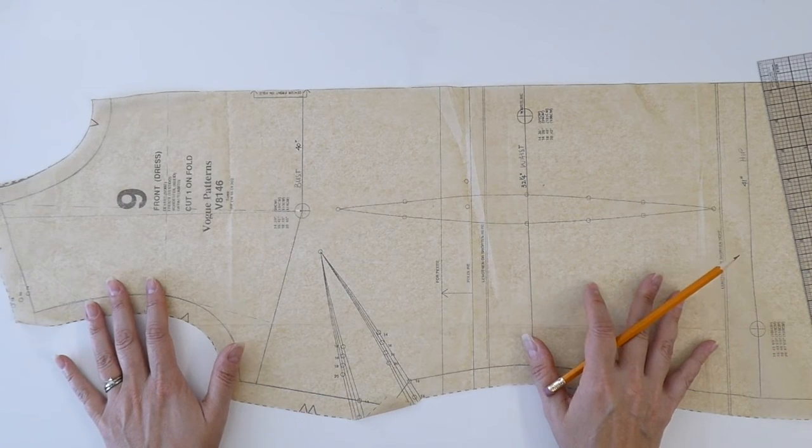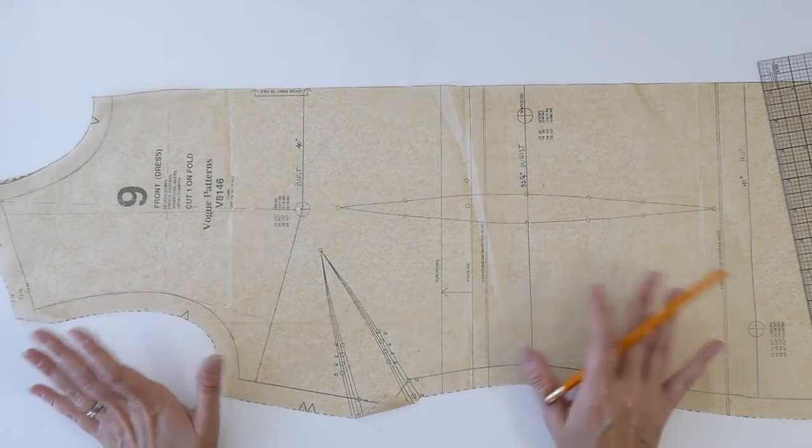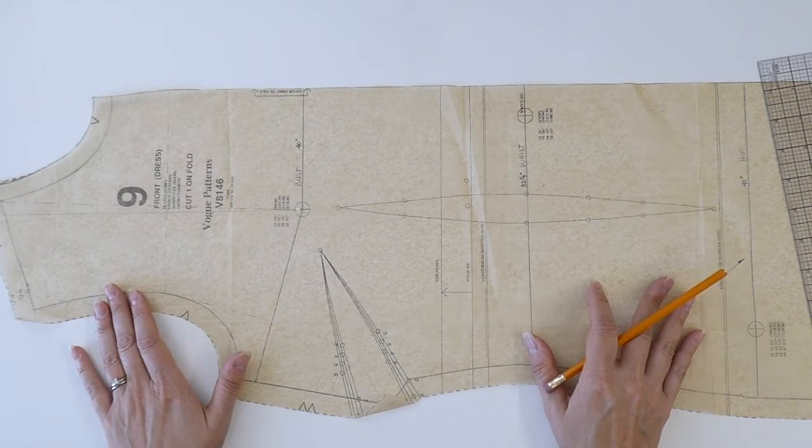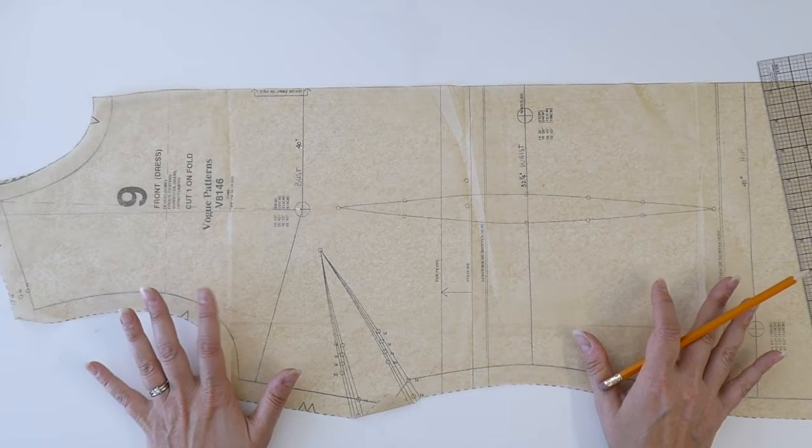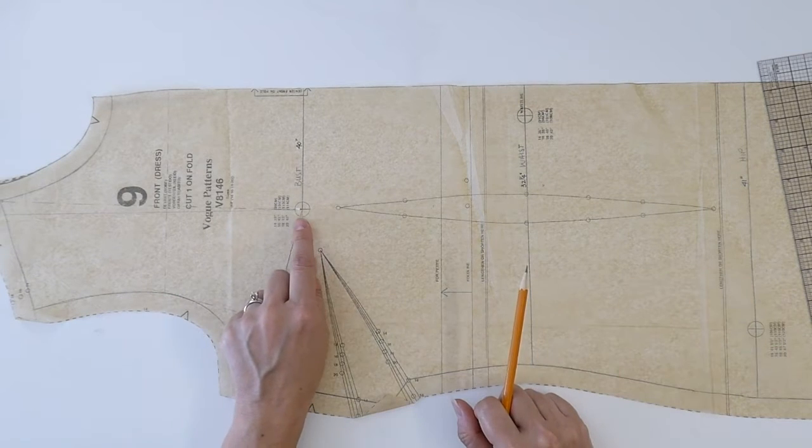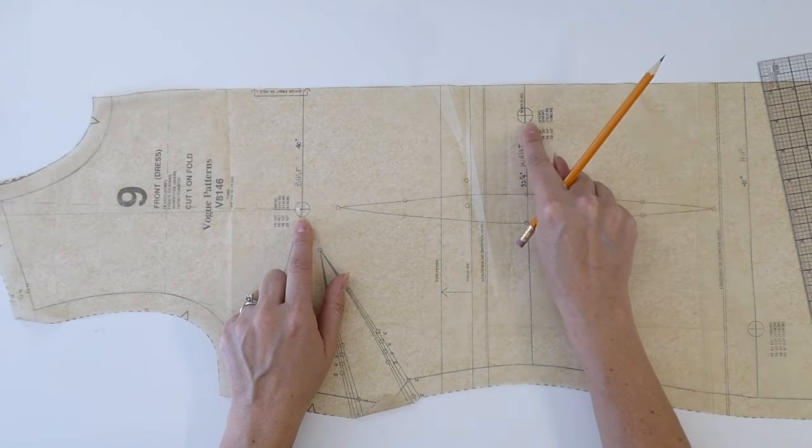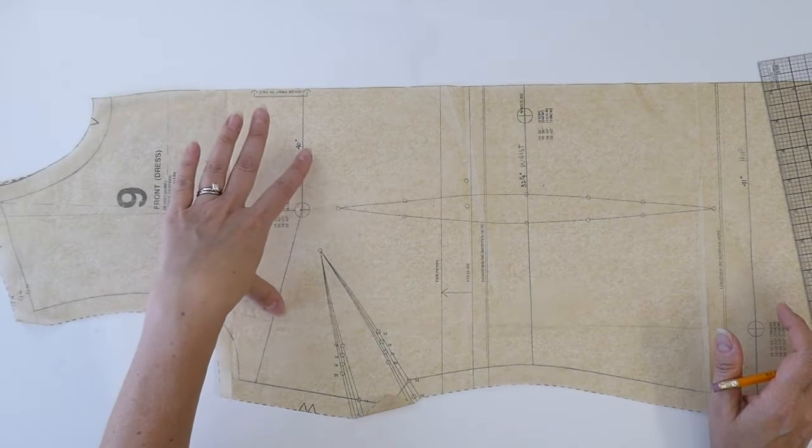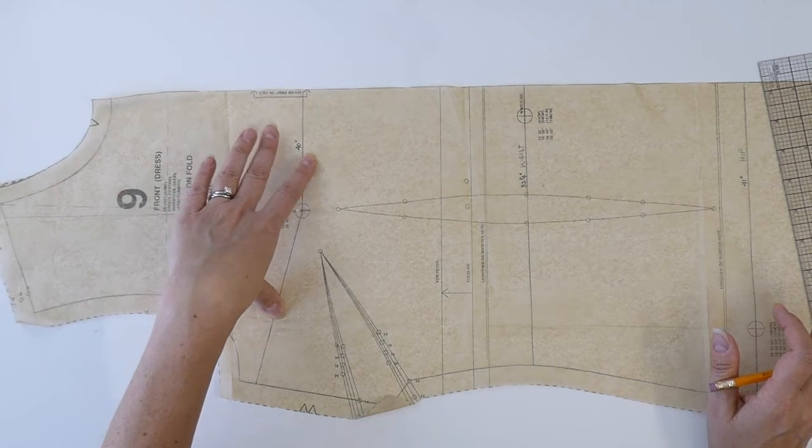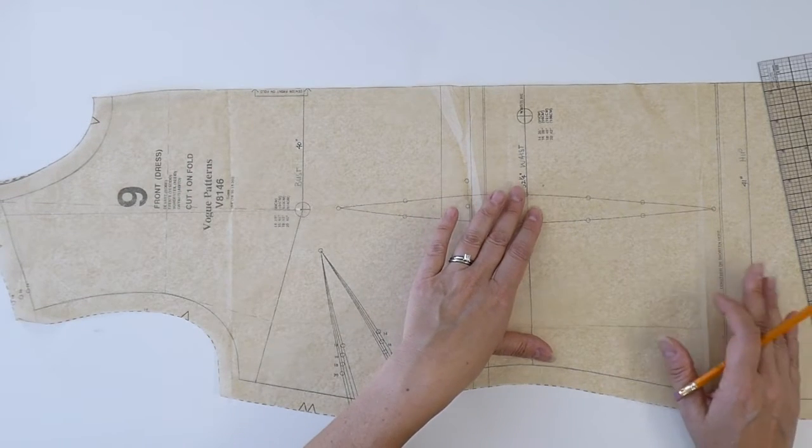The next thing is to find your balance lines and some other critical measurement points that you can. This particular pattern is quite easy to find them on because you can see here that I've got the bust position marked, I've got a waist position marked, and I also have a hip position marked. The bust is probably the most confusing which I'm going to get to.